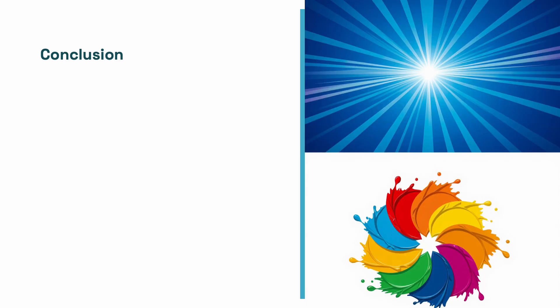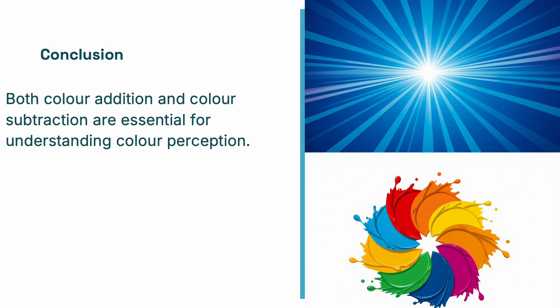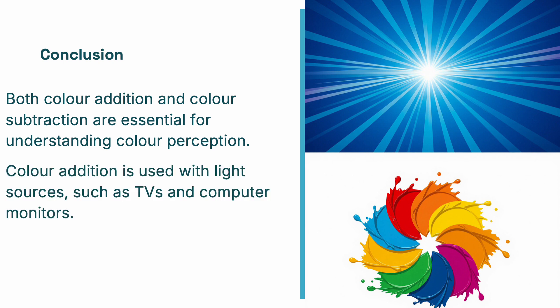To conclude, both color addition and subtraction are essential for understanding how colors work. Color addition is used with light sources like TVs, computer screens and projectors. Color subtraction happens with pigments, paints and inks. Together, these two processes explain almost everything we see in the colorful world around us.